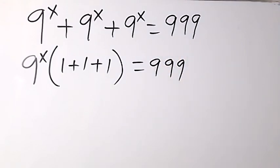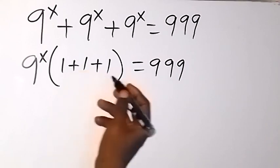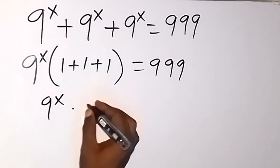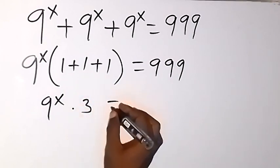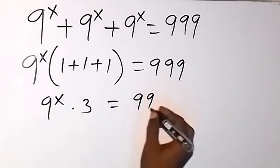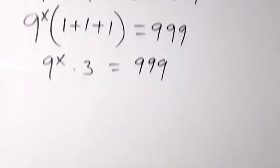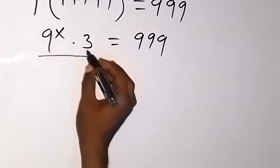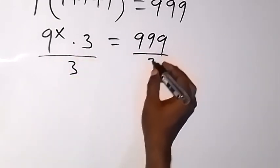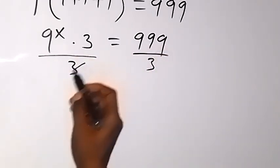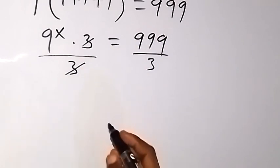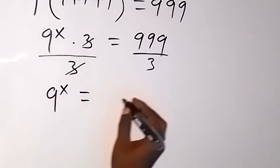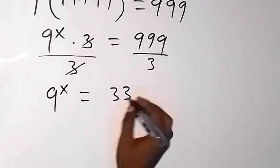From here, adding this we have 3. So we have 9 raised to power x multiplied by 3, gives us 999. So we cancel 3 here. And then we have 9 raised to power x, which then will be equal to 333.